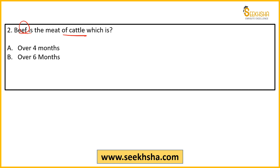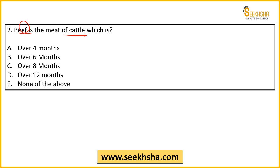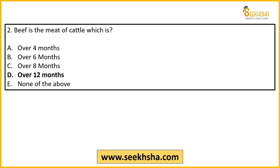The options are 8 months, 12 months, or 9 months. Now we see beef everywhere, but we may not know the specific age classification. Basically, beef is the meat of cattle which is age over 12 months — that is, 1 year and over — it is called beef.